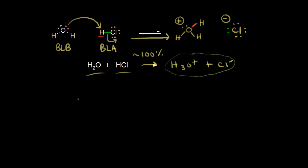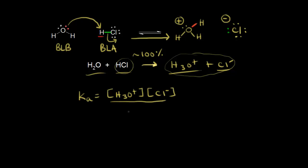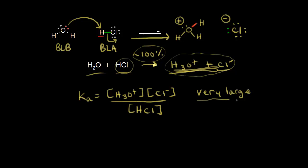Let's write our equilibrium expression: Ka equals concentration of H3O+ times concentration of Cl minus, all over concentration of HCl — and we leave out water. If we think about approximately 100% ionization, we have all products, so there's a very large number in the numerator and an extremely small number in the denominator. That gives you an extremely high value for Ka — Ka is much, much greater than one. That's how we recognize a strong acid: an acid ionization constant much greater than one.